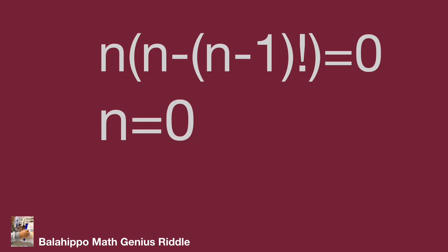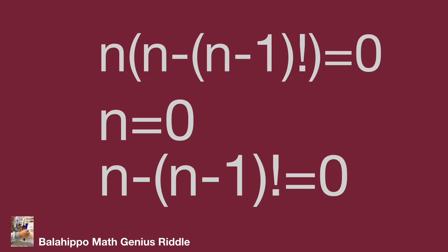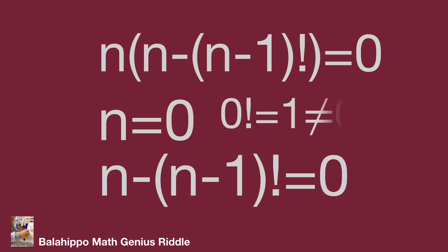Factorize as n times bracket: n minus (n minus 1) factorial equals 0. So either n equals 0 or n minus (n minus 1) factorial equals 0. If n equals 0, substitute into the given equation: 0 factorial equals 1 and 0 squared equals 0, so 1 not equal to 0. Therefore, n equal to 0 is not the answer.